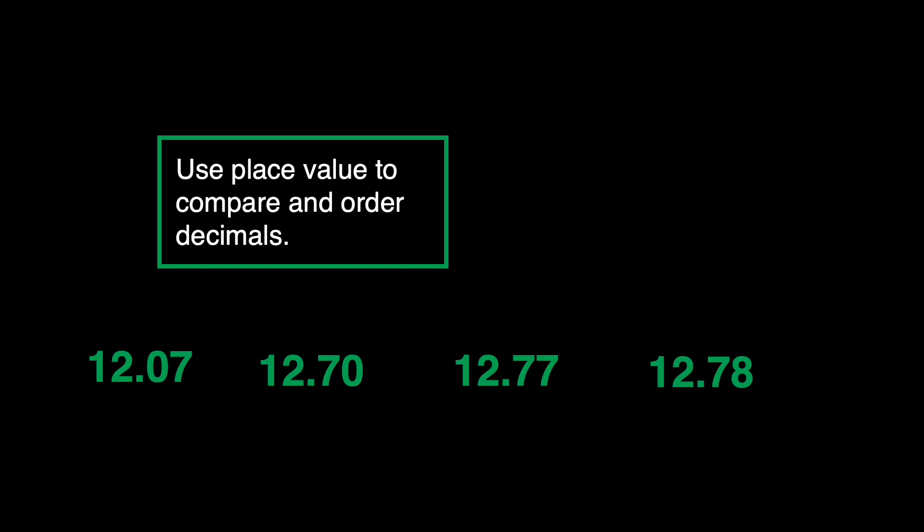Back to our problem. It says: what must be the time of the fifth runner in order to win the race? She or he has to have a time record of 12 and 6 hundredths seconds in order to win the race. Because based on our given, 12 and 7 hundredths seconds is the fastest. Our final answer will be a time record that is less than 12 and 7 hundredths seconds.